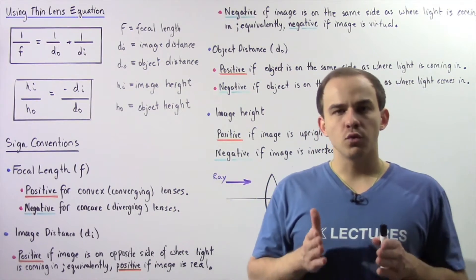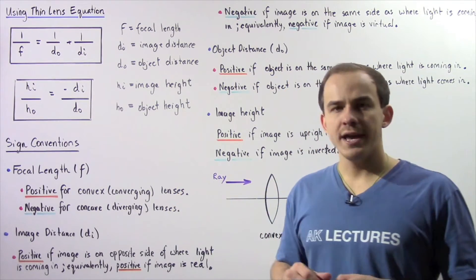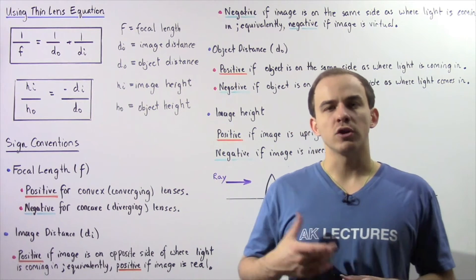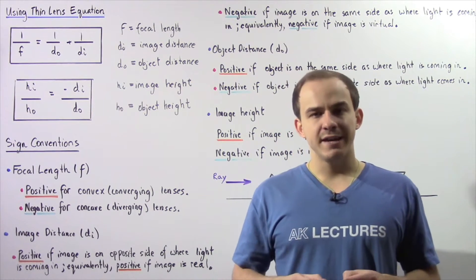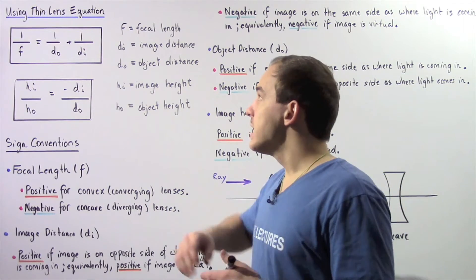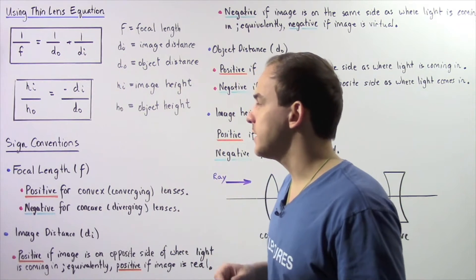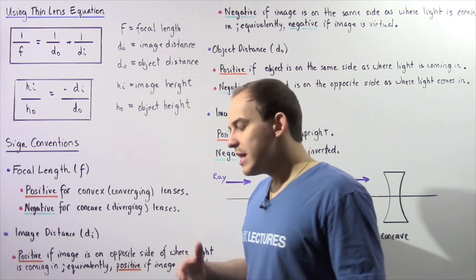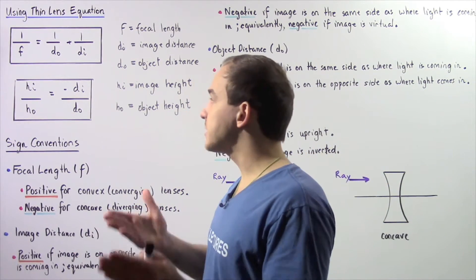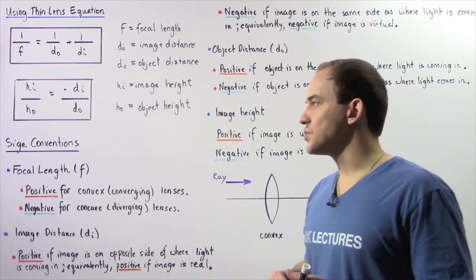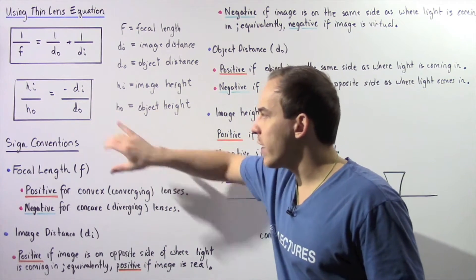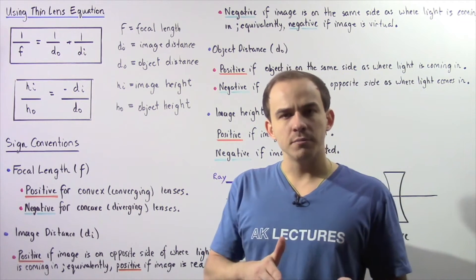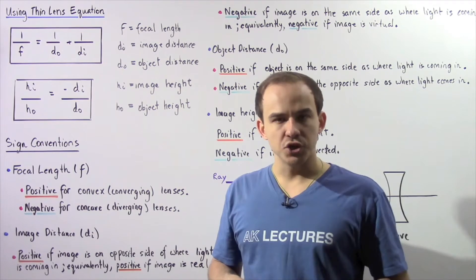In the previous lecture, we derived the thin lens equation as well as the lateral magnification equation for convex and concave lenses. The thin lens equation can be used to determine the location and position of the image formed of our object by our lens. The magnification equation for lenses allows us to compare the size of the image formed to the actual object.